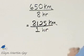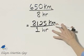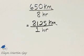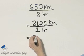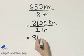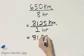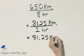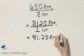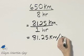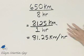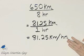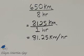Again, that's kilometers. Now you can leave it like this — this is a unit rate. Or you can write it as 81 and 25 hundredths kilometers per one hour, or per hour. You can write it either way as a unit rate.